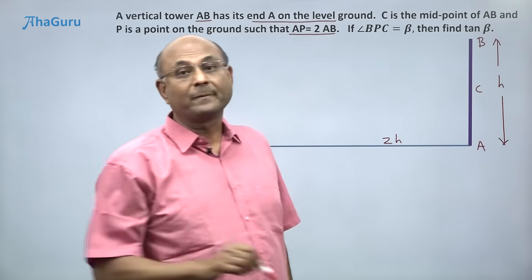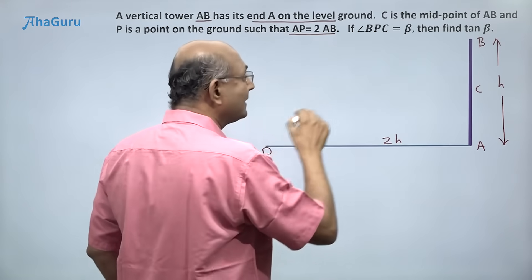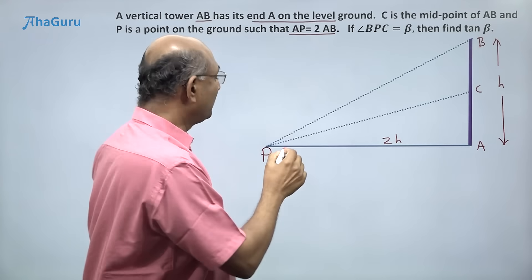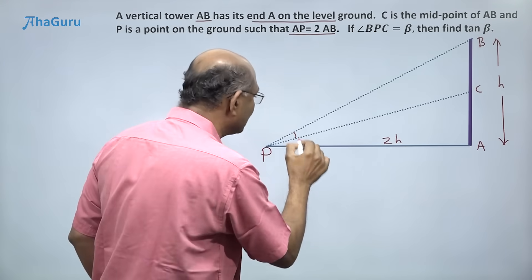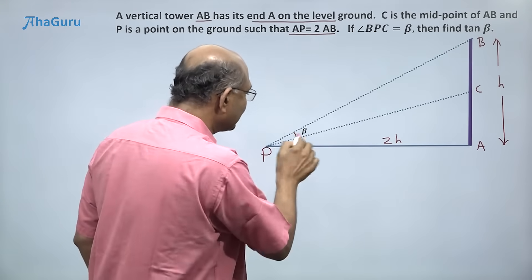So let us think about BPC - this is B, this is P, this is C, so BPC would be this angle. So this angle is BPC, that is beta. So this angle is beta.